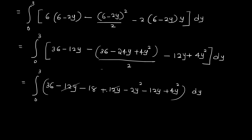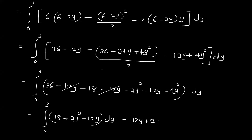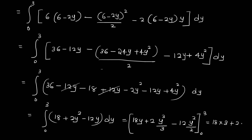Simplifying gives integral 0 to 3 of (36 minus 18 minus 2y squared plus 4y squared plus 2y squared minus 12y) dy, which equals integral 0 to 3 of (18 minus 2y squared minus 12y) dy. Integrating: 18y plus 2y cubed by 3 minus 12y squared by 2, evaluated from 0 to 3. Substituting y equals 3: 18 times 3 plus 2 times 27 by 3 minus 12 times 9 by 2.